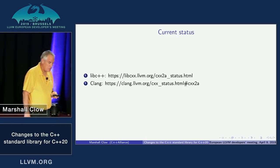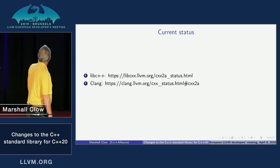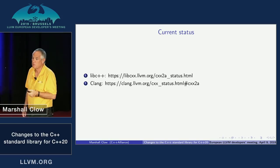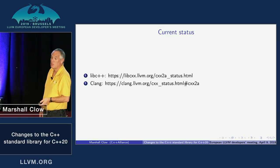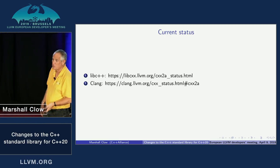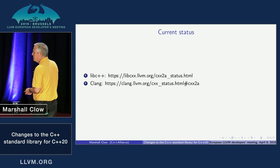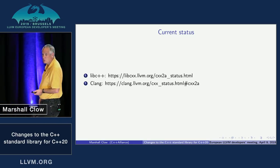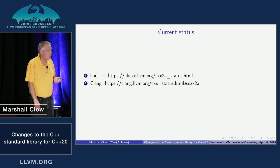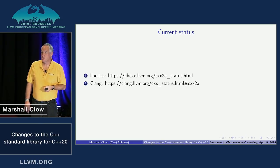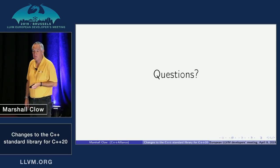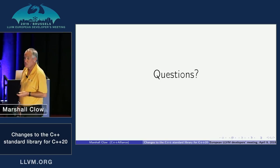The current status: libc++'s status page lists all features approved for C++20, whether they've been implemented, and what version of LLVM they first appeared in. Some say 'nine,' meaning the next release; a few say six or seven. There's also a corresponding page for Clang showing the status of all C++20 language features. We have about seven minutes for questions.